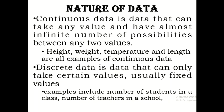Discrete data, on the other hand, can only take specific, fixed values. For example, the number of students in a class must be specific — you can have 10, 15, 16, or 17, but you cannot have 16.5. These are examples of discrete data. Now let's look at the properties of measurement scales.